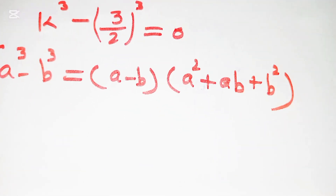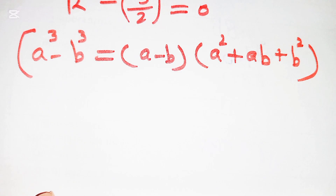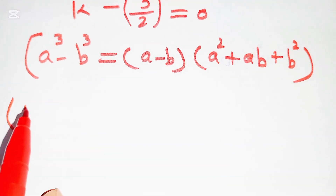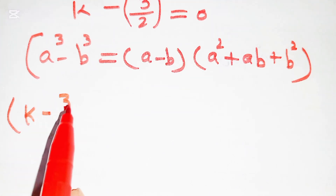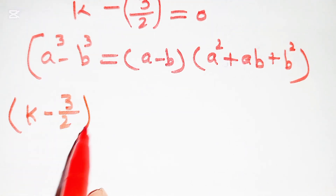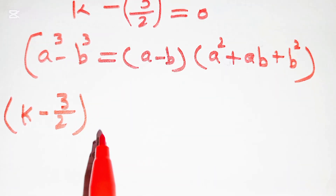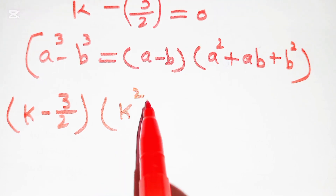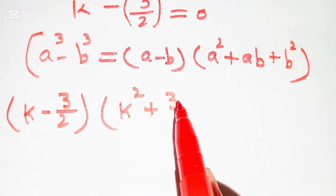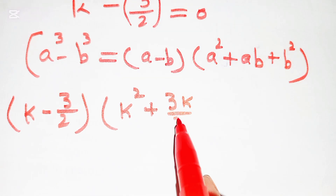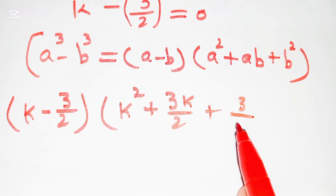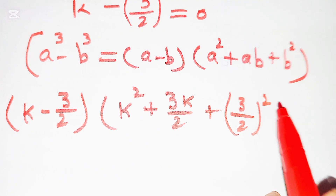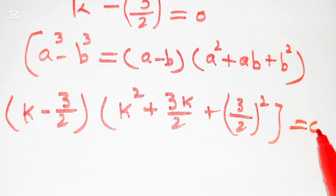Applying the formula, we can write (k − 3/2)(k² + (3/2)k + (3/2)²) = 0, which expands to (k − 3/2)(k² + 3k/2 + 9/4) = 0.